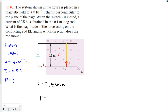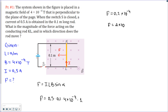Alpha here is 90 degrees because the wire and the magnetic field lines are perpendicular to each other. F = I × L × B × sin(90°), which gives: 0.5 × 0.1 × 4×10⁻⁴ × 1 = 0.2×10⁻⁴ newtons. That's the answer to the first problem.